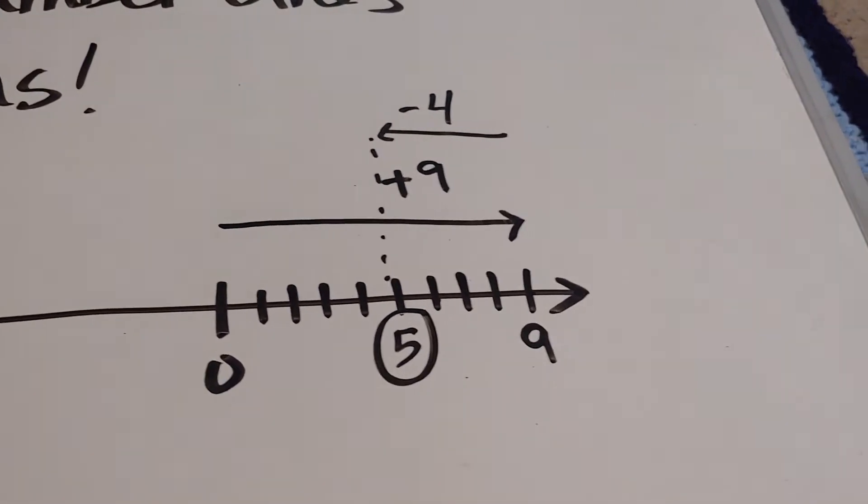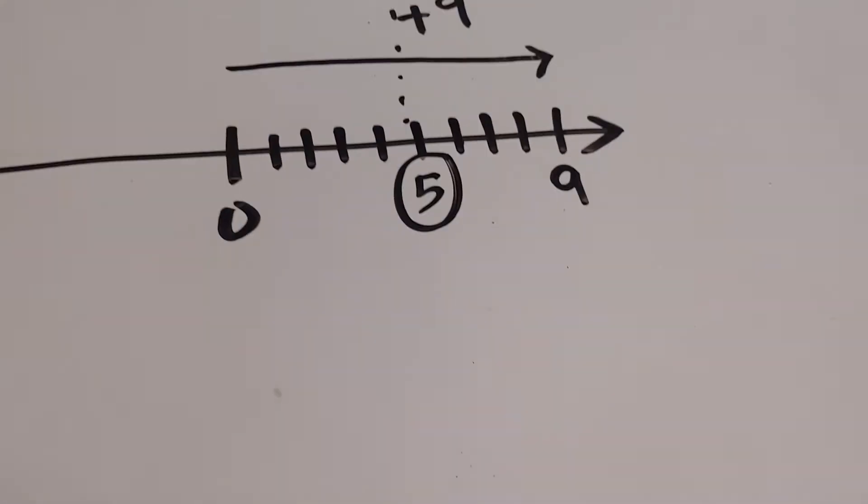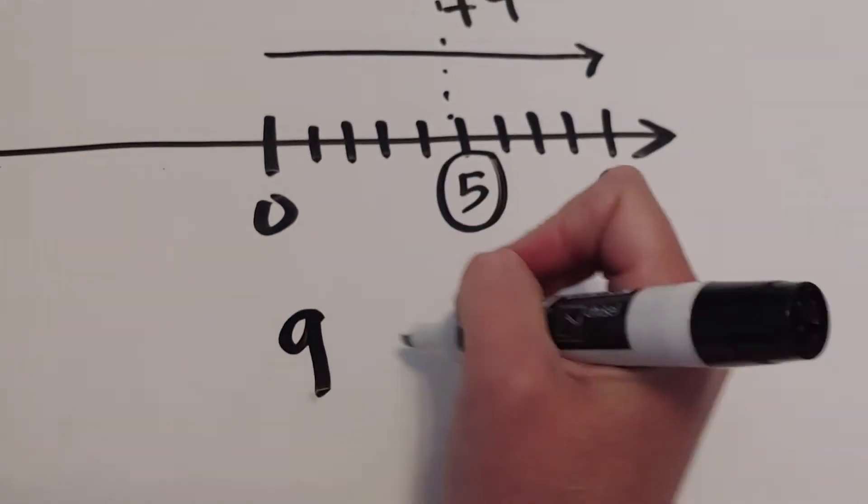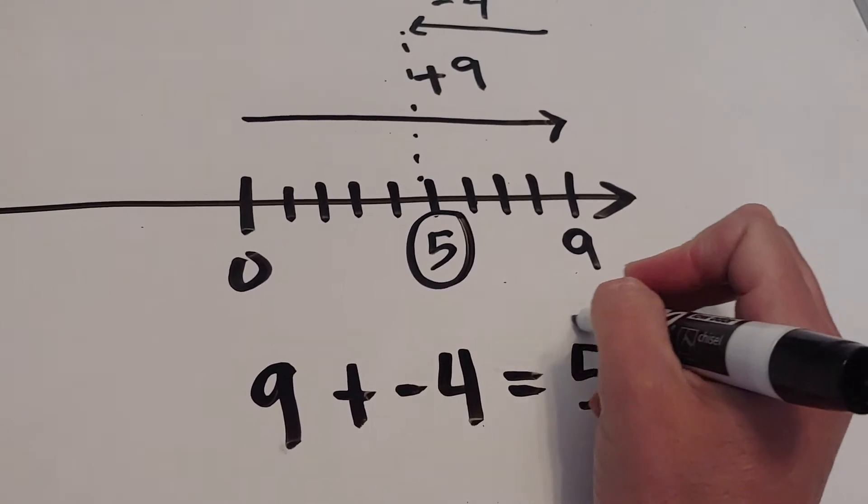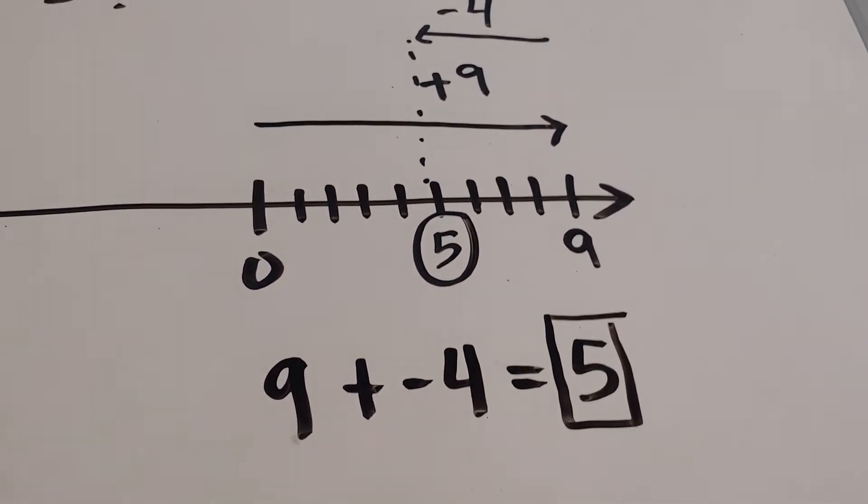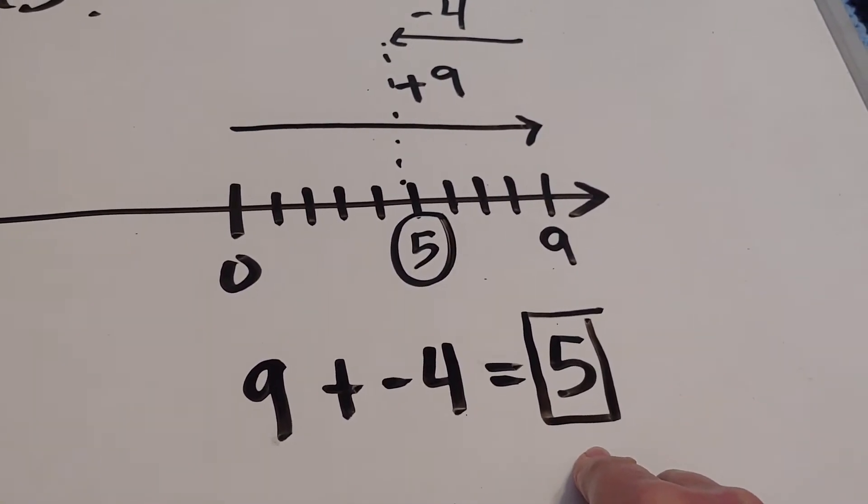The Common Core textbook will have students write an equation. That equation is nine plus negative four equals five. An equation means the problem you're solving and the answer.